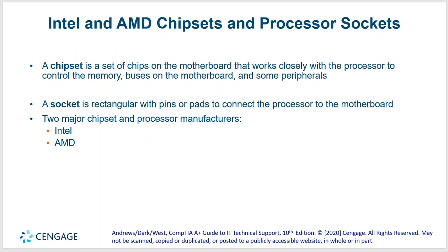A chipset is a set of chips on the motherboard that works closely with the processor to control memory, buses on the motherboard, and some peripherals. Chips used to be spread all over the motherboard, and then they centralized them to make a chipset. Think of a chipset like a bus interchange — all the information goes into the chipset and is sent somewhere else along a bus.